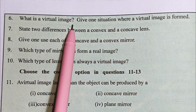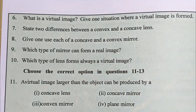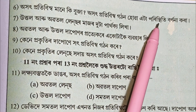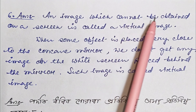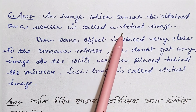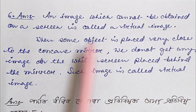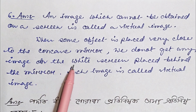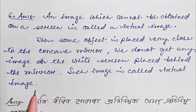Question number 6: What is a virtual image? Give one situation where a virtual image is formed. An image which cannot be obtained on a screen is called a virtual image. When some object is placed very close to a concave mirror, we don't get any image on the white screen placed behind the mirror — such an image is called a virtual image.